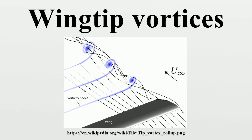Wingtip vortices can pose a hazard to aircraft, especially during the landing and take-off phases of flight. The intensity or strength of the vortex is a function of aircraft size, speed, and configuration. The strongest vortices are produced by heavy aircraft flying slowly with wing flaps and landing gear retracted. Large jet aircraft can generate vortices that can persist for many minutes, drifting with the wind. The hazardous aspects of wingtip vortices are most often discussed in the context of wake turbulence.